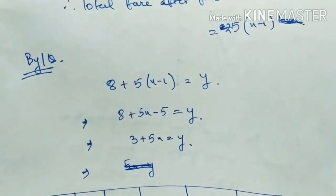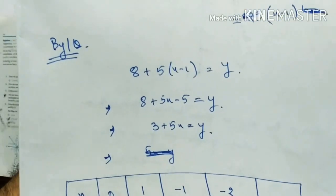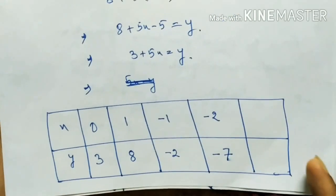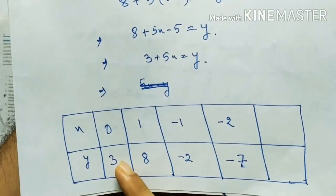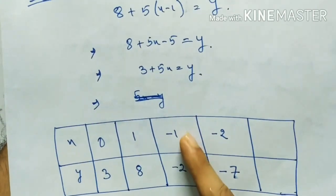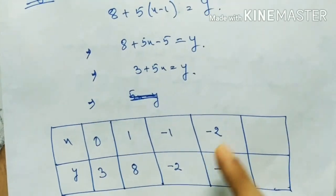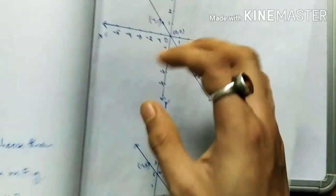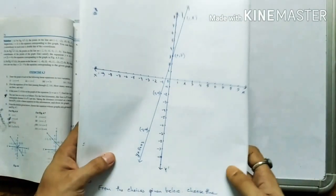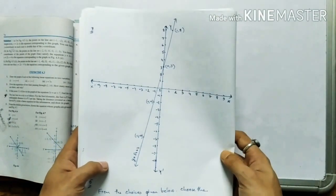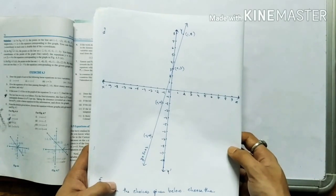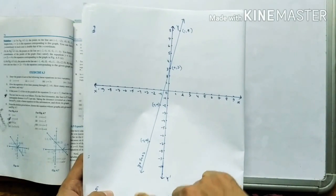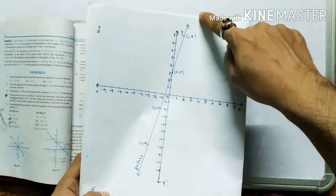Now draw the graph. Make a table: when x=0, y=3; when x=1, y=8; when x=minus1, y=minus2; when x=minus2, y=minus7. Plot these points and join them with a straight line to get the graph of this equation.